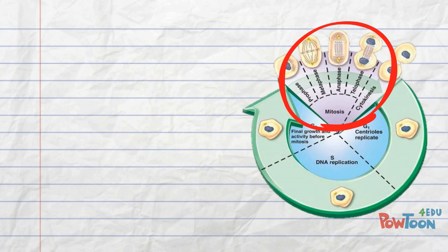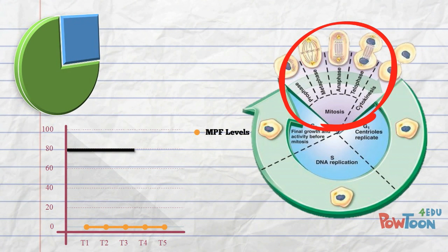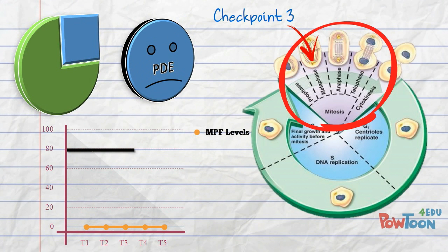During mitosis, MPF levels stay relatively constant until checkpoint three is reached. At this stage, the production of protein degrading enzymes sees the gradual decrease in available cyclin and therefore the reduction in MPF. This triggers the movement through the checkpoint and initiates the end of mitosis.